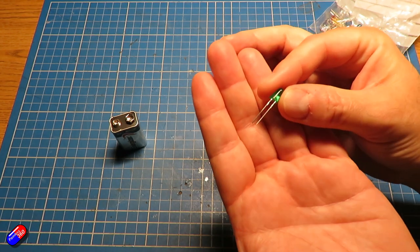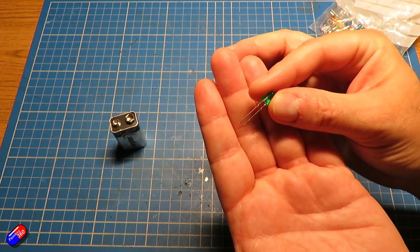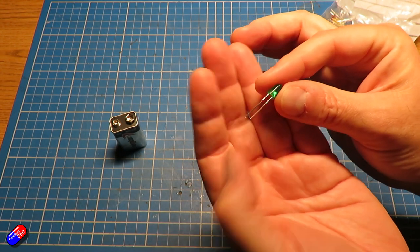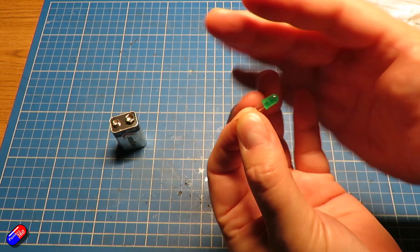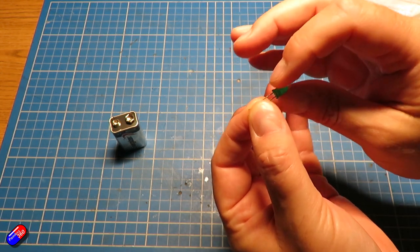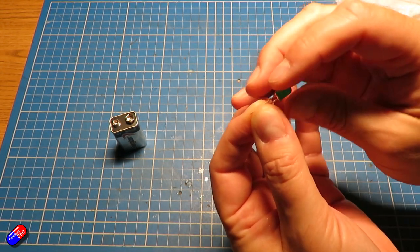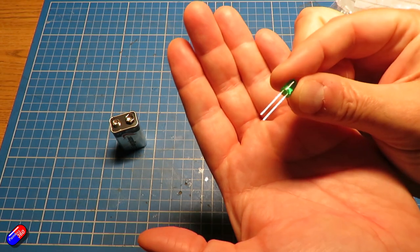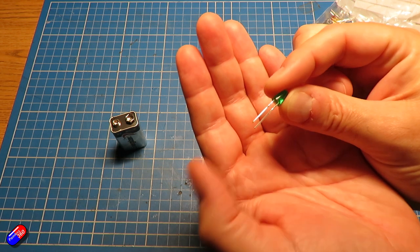Now the other thing you need to think about is that LEDs have a positive and a negative side. The negative side is always the shorter lead, and also if it's this kind of LED, it has a flat spot on the actual piece itself. That's really handy because if you cut the leads off then how do you know which is the shorter lead? That's the way to tell.